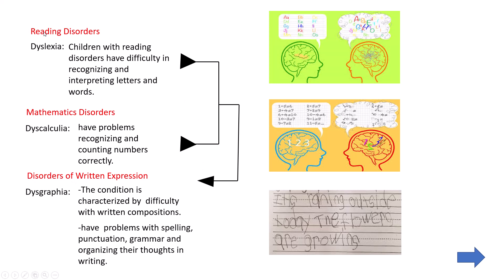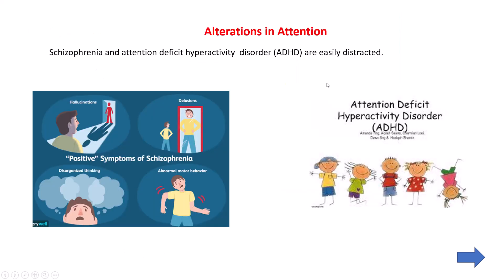To summarize: dyslexia is a reading disorder where the child has problems recognizing and interpreting letters and words. Dyscalculia is a mathematical disorder where the child has problems recognizing and counting numbers. Dysgraphia is a disorder of written expression where children have problems expressing their feelings in written form, as well as problems with spelling, punctuation, grammar, and organizing their thoughts.